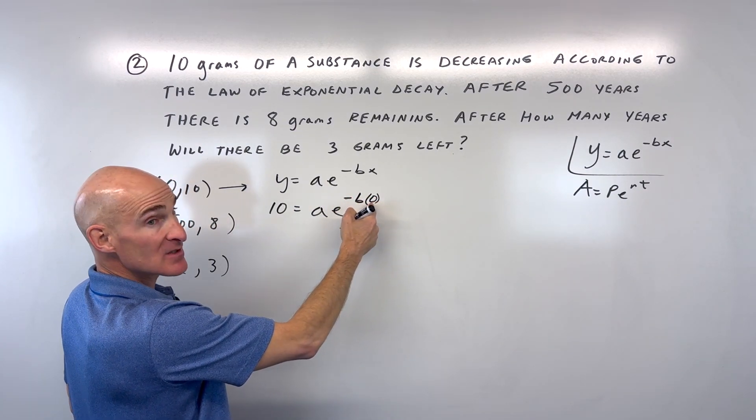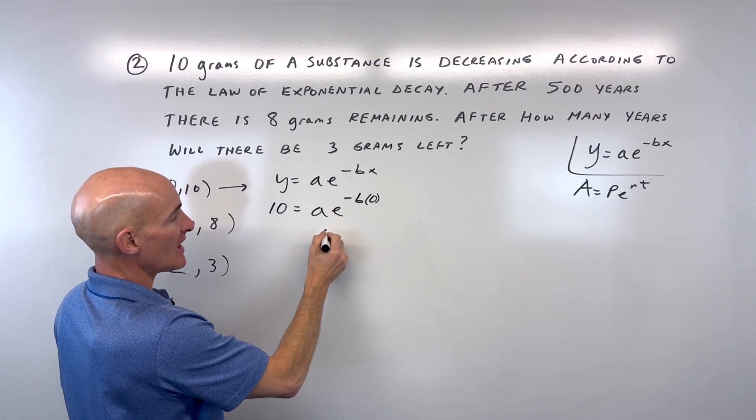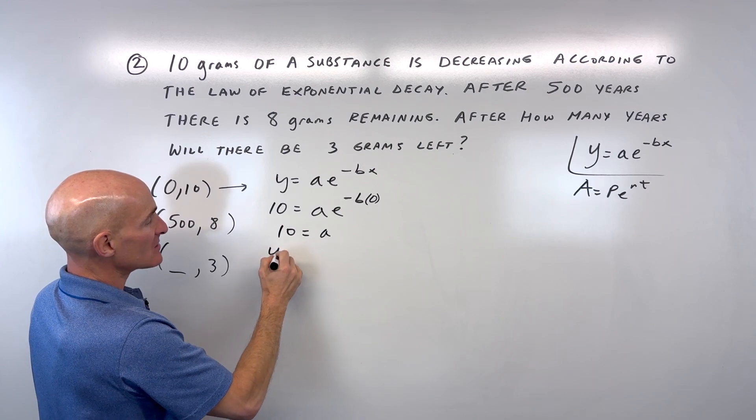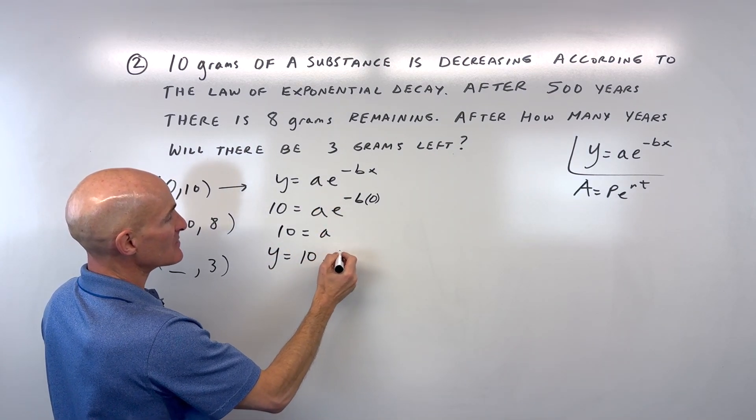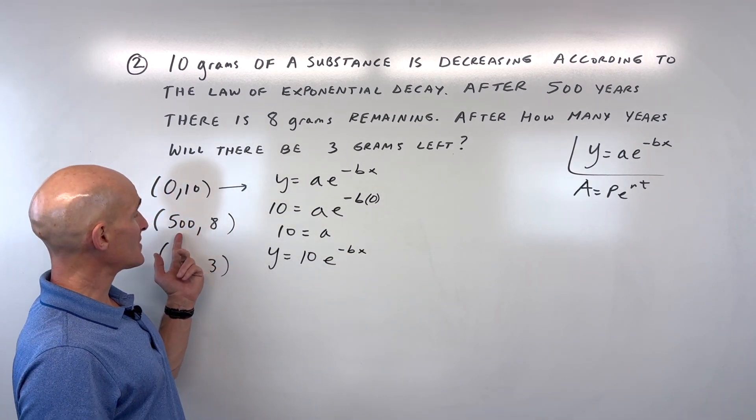When y is 10, x is 0. Negative b times 0 is 0, e to the 0 is 1, and 1 times a is a. So a equals 10 - that's our starting amount. Now we have y equals 10 times e to the negative bx. We want to solve for b. Let's use this other point, 500 comma 8.